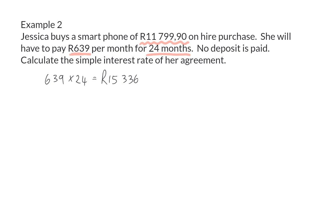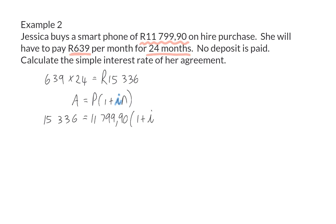Everything she paid more than the original amount is interest, and we are asked to calculate the interest rate. Hire purchase is always calculated with simple interest so we can substitute into this formula. Of the 4 variables, we need to calculate i, the interest rate, so for the rest we need to substitute values. The final amount is what she paid in total for this smartphone and the original amount is the original cost of the phone. This should be multiplied by the bracket in which we want to calculate i. The interest rate here is calculated per annum, so the period should be in years — the 24 months are actually 2 years.